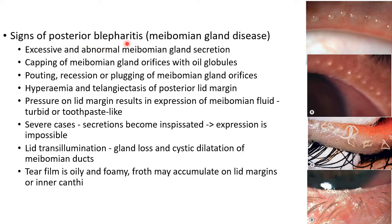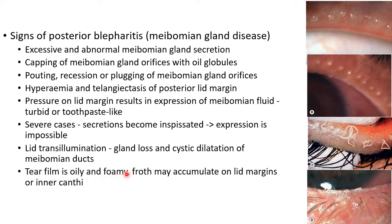Posterior blepharitis is a meibomian gland disease. There will be excessive and abnormal meibomian gland secretion, and capping of meibomian gland orifices with oil globules. There will be pouting, recession or plugging of meibomian gland orifices, and hyperemia and telangiectasia of the posterior lid margin. Applying pressure on the lid margin leads to expression of meibomian fluid which will be turbid or toothpaste-like. In severe cases the secretions become inspissated and expression is almost impossible. Lid transillumination will reveal gland loss and cystic dilatation of meibomian ducts. The tear film is oily and foamy, and froth may accumulate on lid margins or inner canthi.